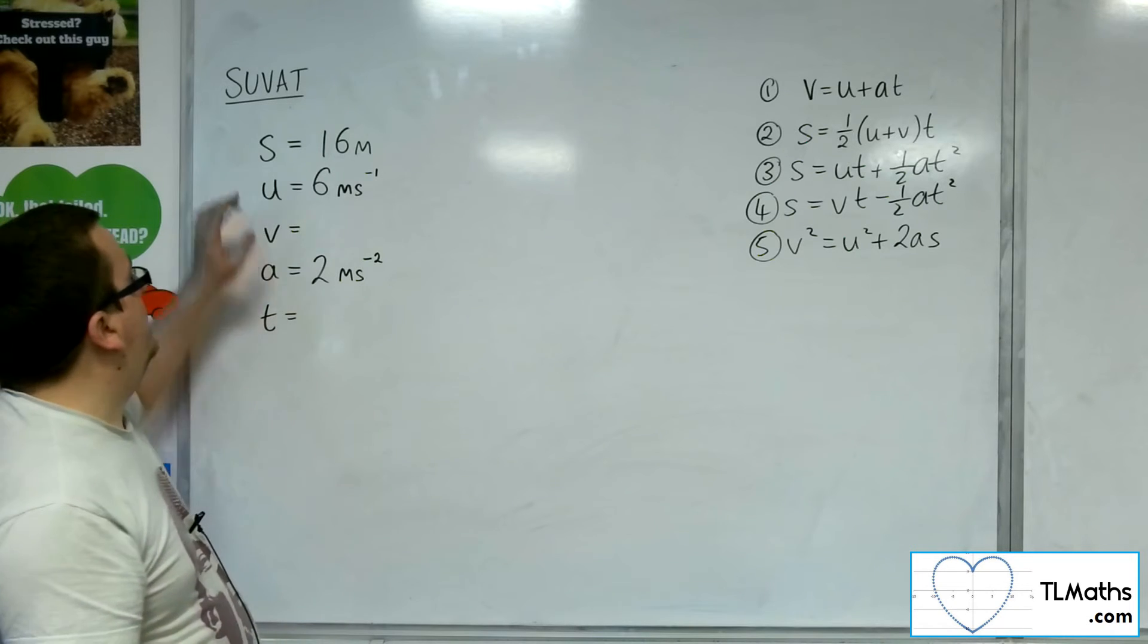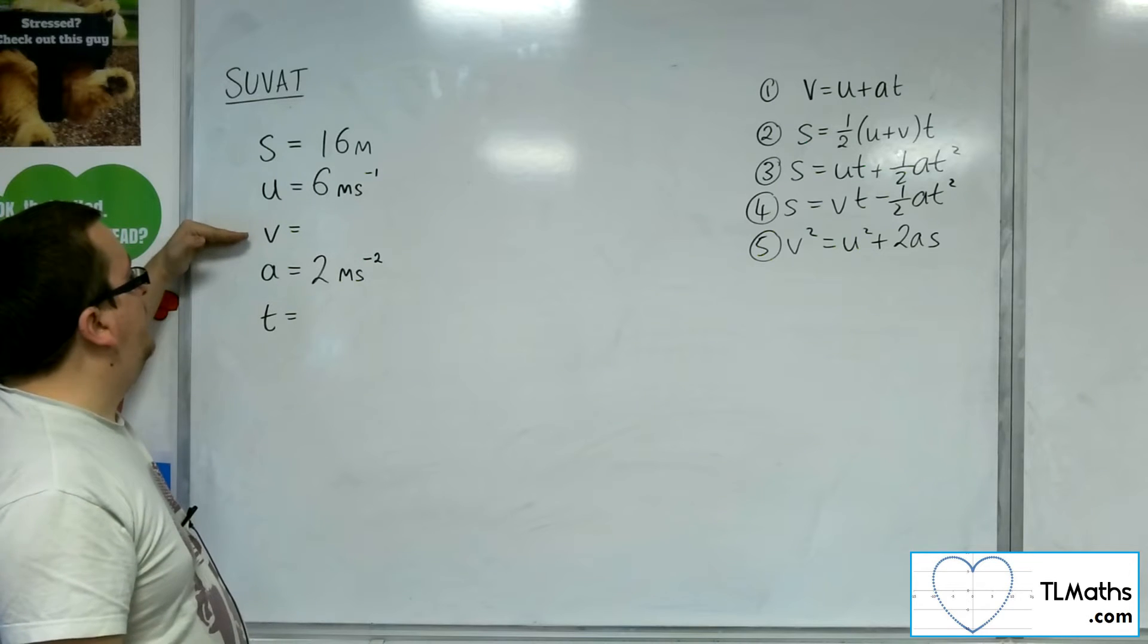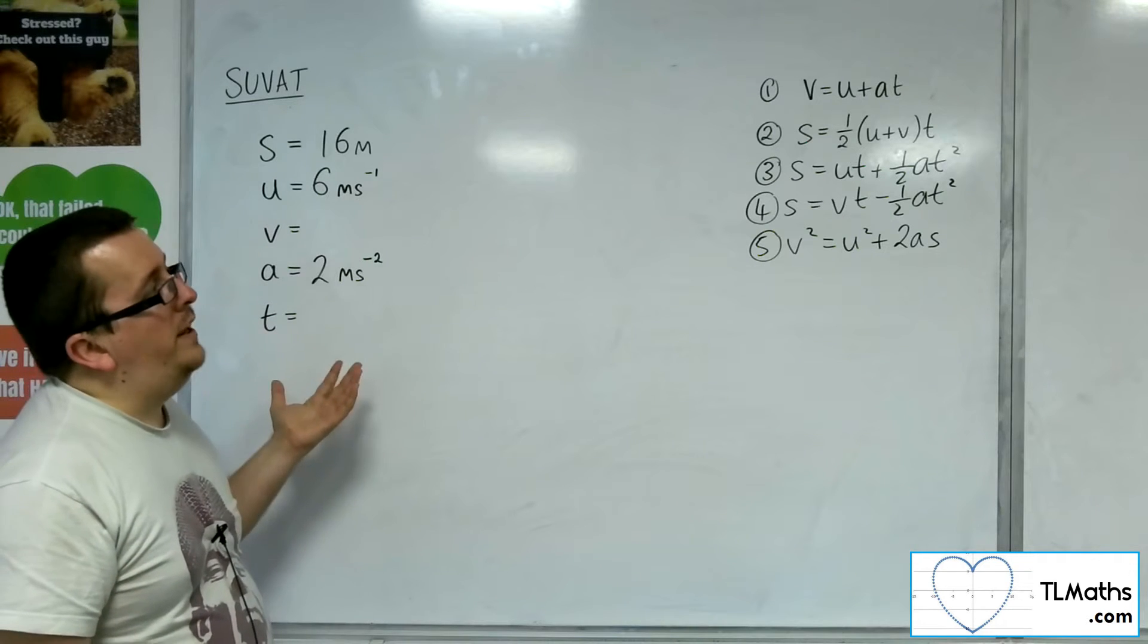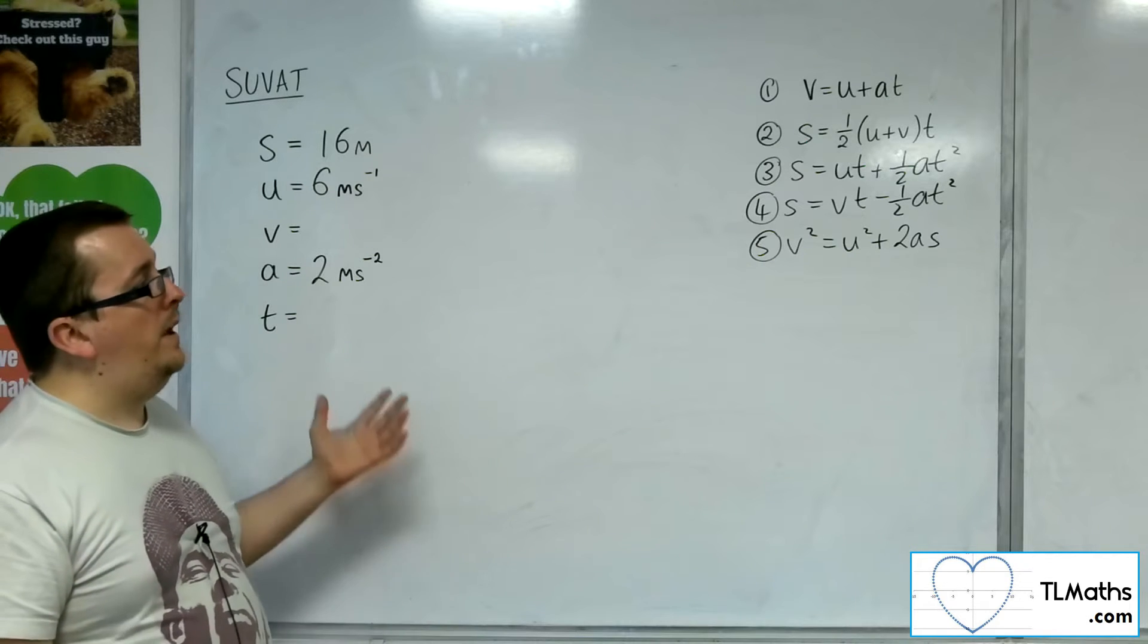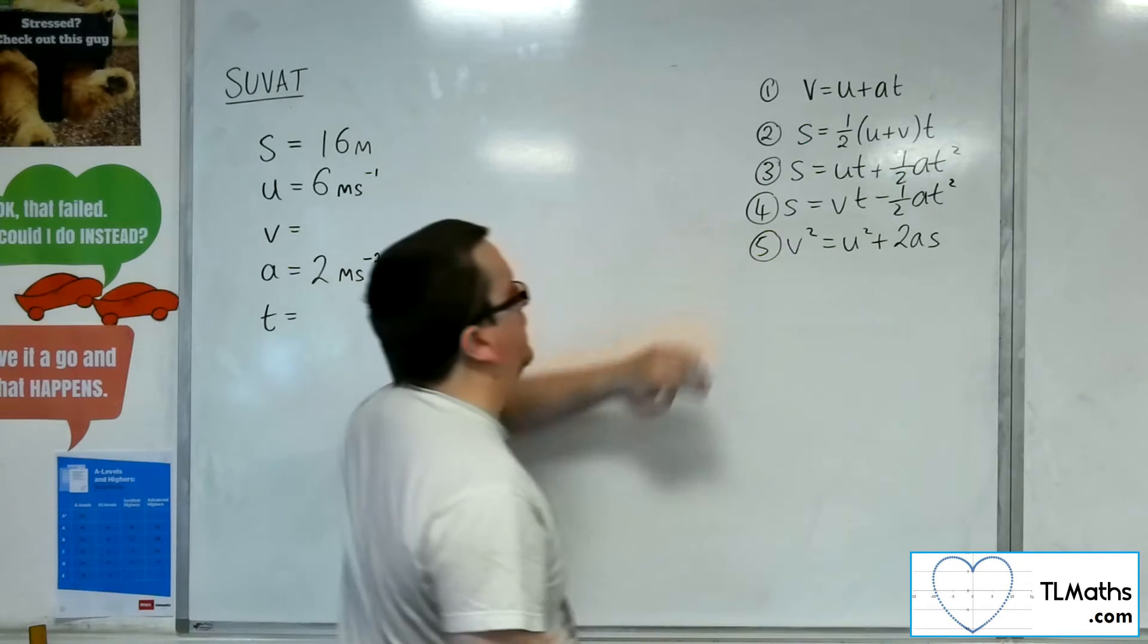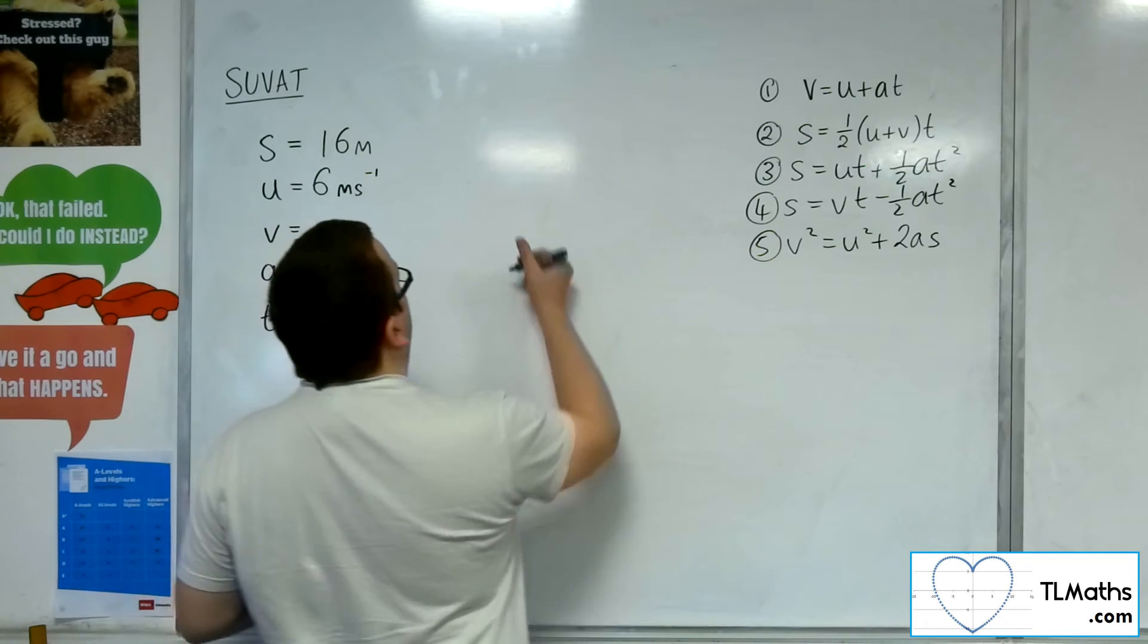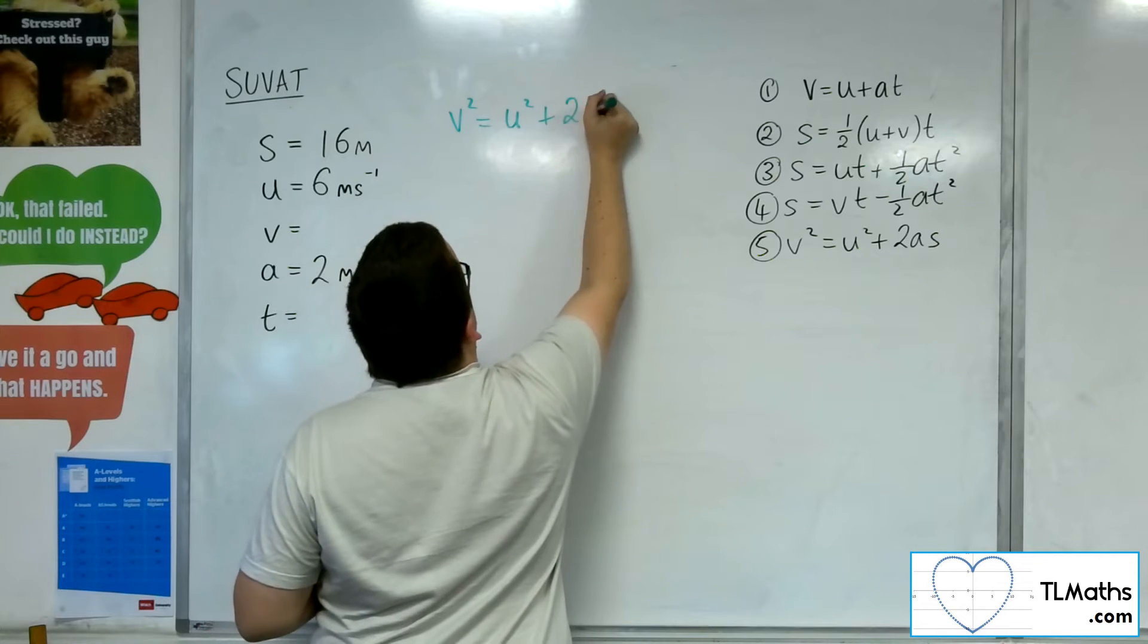So I have s, u, and a, and let's say I want to find v first. Then what I want is an equation that doesn't have t in it. I want to home in on the one that doesn't have t and that's the fifth one. So what I can say is that v squared is u squared plus 2as.